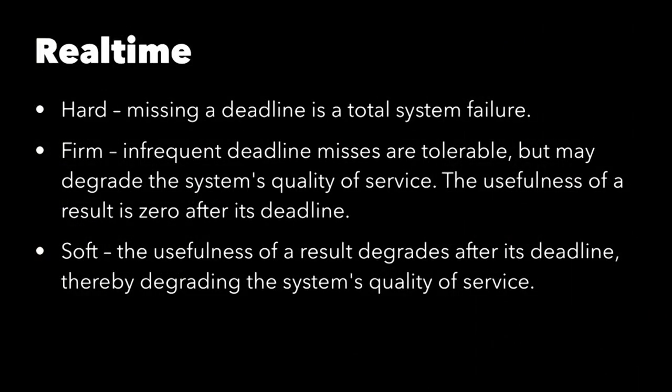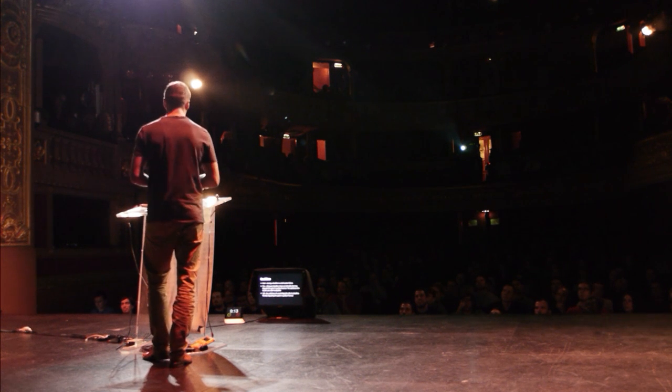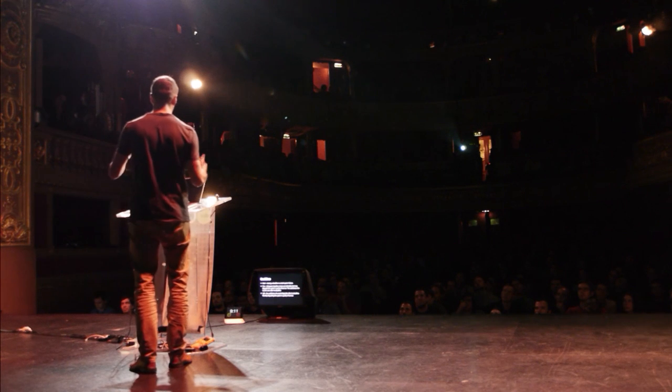The next thing we should talk about is real-time. Some people might be concerned about using a garbage-collected language with its own scheduler for what seems like a real-time task. According to Wikipedia there are basically three categories of real-time. Usually when we talk about real-time on the web, we talk about soft or firm real-time. But there's also hard real-time, where missing a deadline is a total system failure.